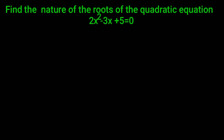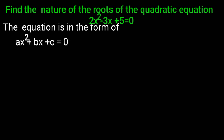The given equation is in the form of ax² + bx + c = 0, where a is equal to 2, b is equal to -3, and c is equal to 5.